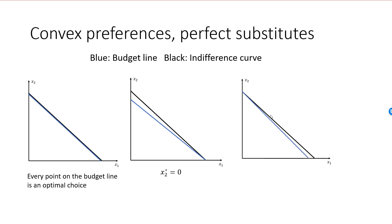The opposite is true if the budget line is steeper than the indifference curve. She will spend her entire income on good 2: X2 star equals M divided by P2.